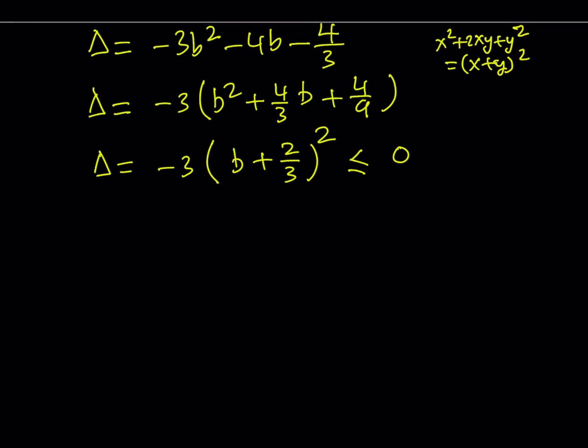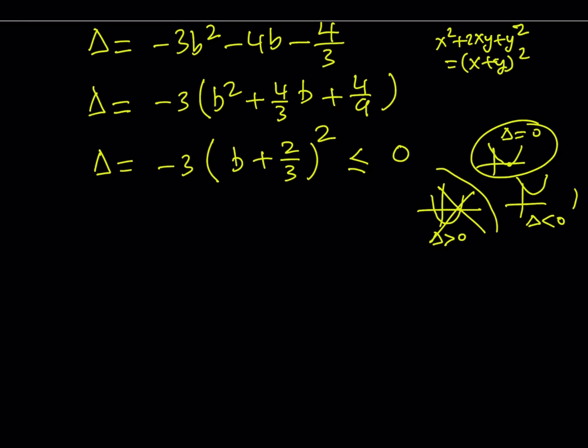So if the discriminant cannot be positive, you remember for a quadratic equation there are three cases, right? When you graph it, either it has two x-intercepts or a single x-intercept, which means it's tangent to the x-axis, or it doesn't intersect the x-axis at all. So the cases are, basically, this is the discriminant is positive, this is where the discriminant is negative, and this is where the discriminant is zero. Since we are not able to get the case where discriminant cannot be positive, we'll basically forget about it. So that means that our parabola, and in this case, it's less than or equal to zero,